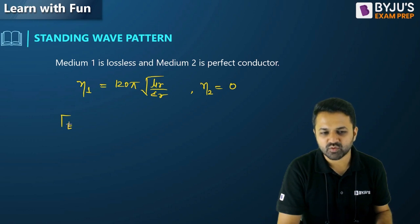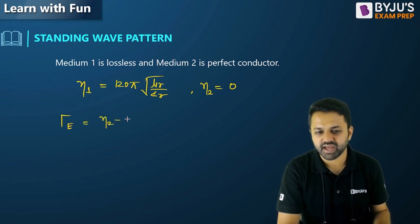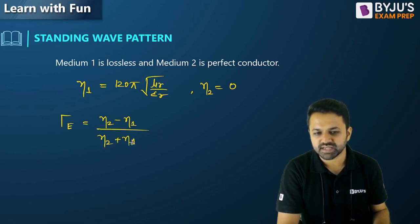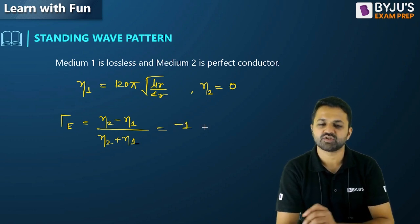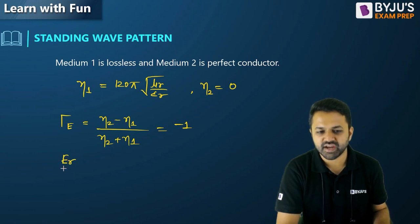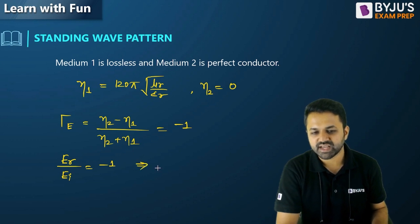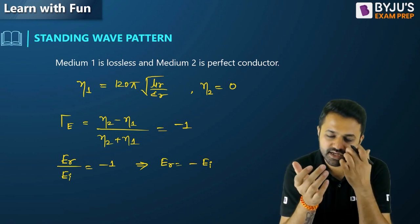When I calculate the reflection coefficient for the electric field, it is given by (η2 − η1) / (η2 + η1). Substituting η2 = 0, I get the reflection coefficient equal to −1. This means the reflected wave equals minus the incident wave — a 180-degree phase shift between the incident wave and the reflected wave.